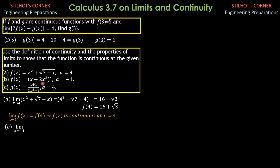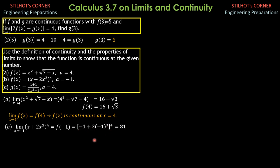Part b: (x + 2x³)⁴ for a = −1. Take note that there is no restriction here; this is defined when x is −1. So we simply evaluate the limit by substituting x = −1, and that is also the function value when x = −1. It is (−1 + 2(−1)³)⁴ = (−1 + 2(−1))⁴ = (−1 − 2)⁴ = (−3)⁴ = 81. Since the limit of f(x) as x approaches −1 equals f(−1) = 81, f(x) is continuous at x = −1.